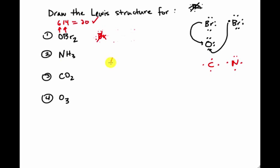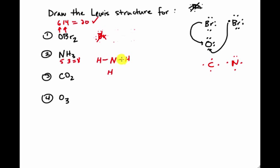For ammonia, nitrogen goes in the middle with the hydrogens all around. I have five valence electrons from nitrogen and three from the hydrogens, giving a total of eight valence electrons to use: two, four, six, eight. And there's my Lewis structure for ammonia.